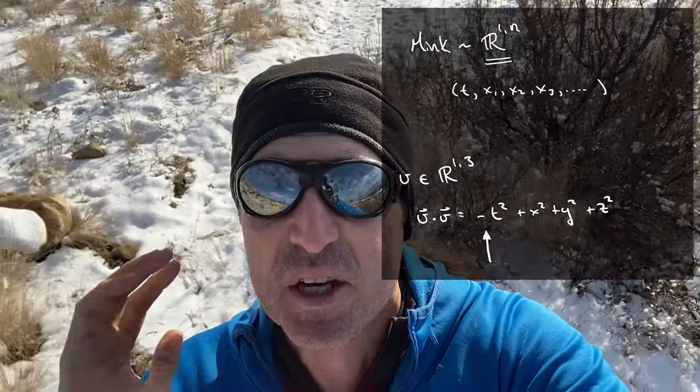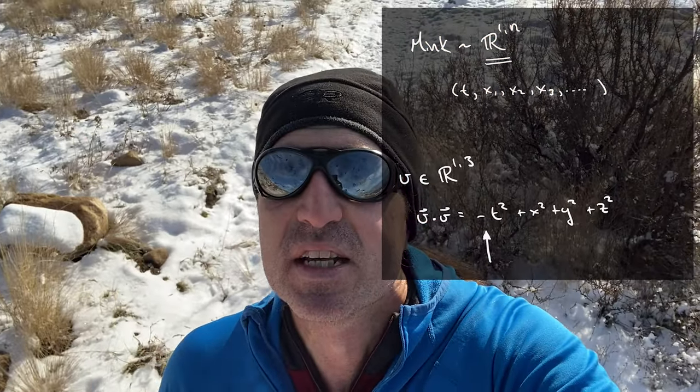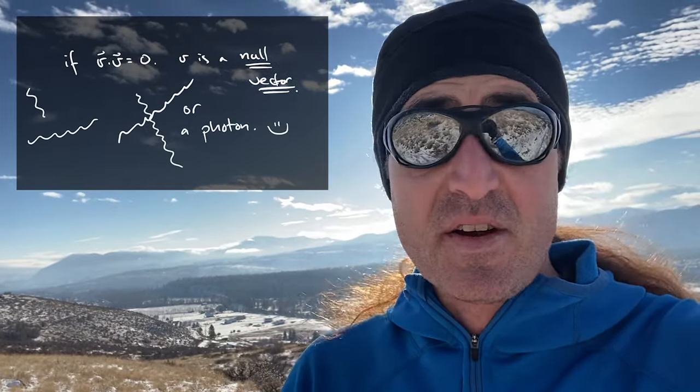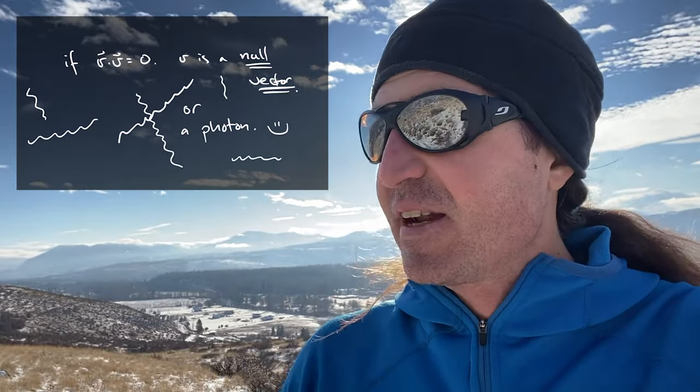The inner product, you might recall, looks something like this. For some vector v, v dot itself is minus t squared plus x squared plus y squared plus z squared, and if you have more than three dimensions you just keep adding on more. That minus sign causes all the trouble because the inner product is not positive definite, which means there are non-trivial vectors that have zero norm. Mathematicians call those null vectors, but physicists call these light-like vectors because you can use them to model photons — particles of light, things that travel at the speed of light. That's kind of the whole special relativity thing.